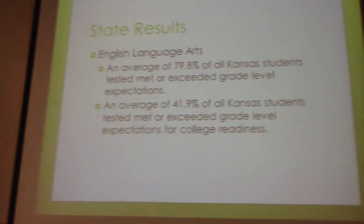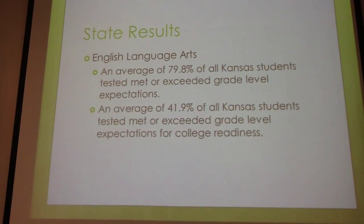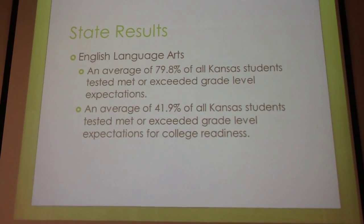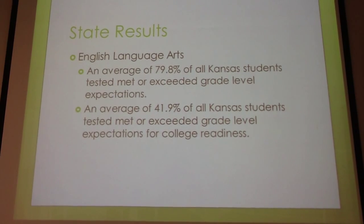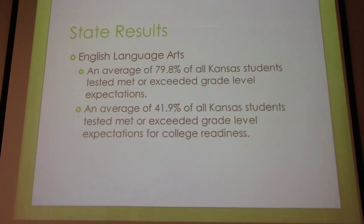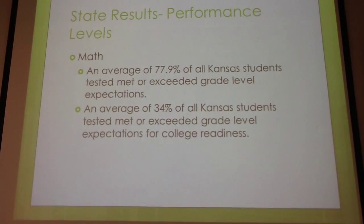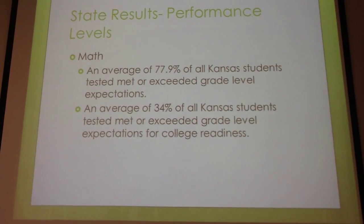Here are the results we know so far. In Kansas, an average of 79.8% of all students met or exceeded grade level expectations in English language arts — scoring a two, three, or four. An average of 41.9% met or exceeded expectations for college readiness, meaning levels three and four. In math, 77.9% scored a two, three, or four, and 34% scored at levels three and four.